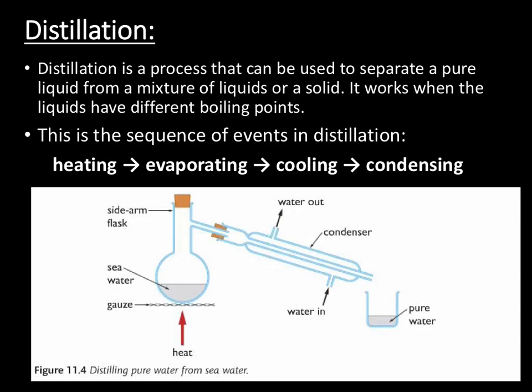Unfortunately, simple distillation only allows us to separate out things that have very different boiling points. So if the temperature goes higher than the boiling point of the substance with the higher boiling point, they'll just mix up again. We have to keep it above the boiling point of the first liquid but below the boiling point of the second. If we have a mixture of liquids with similar boiling points, then we need to use a different method, and that method is fractional distillation.